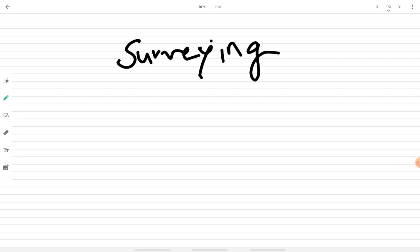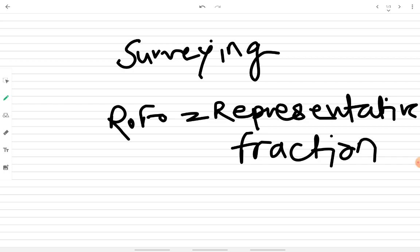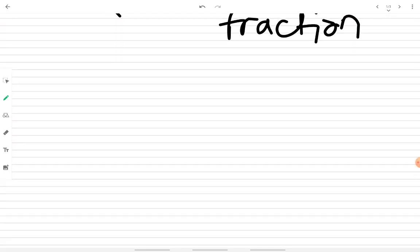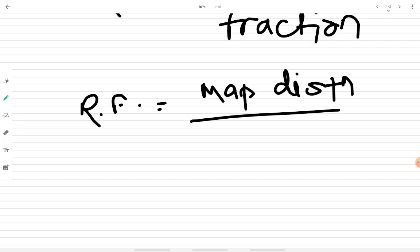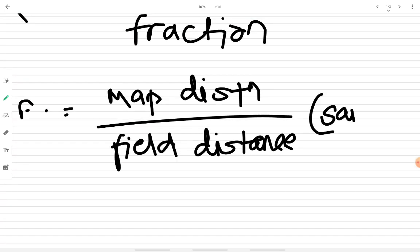In this lecture on surveying, we are going to see what representative fraction is — shortened as RF. RF means representative fraction. As the name suggests, it is a fraction or a ratio. RF is equal to map distance divided by field distance, and it is expressed in the same units — whatever units the map distance has, the field distance must also have.